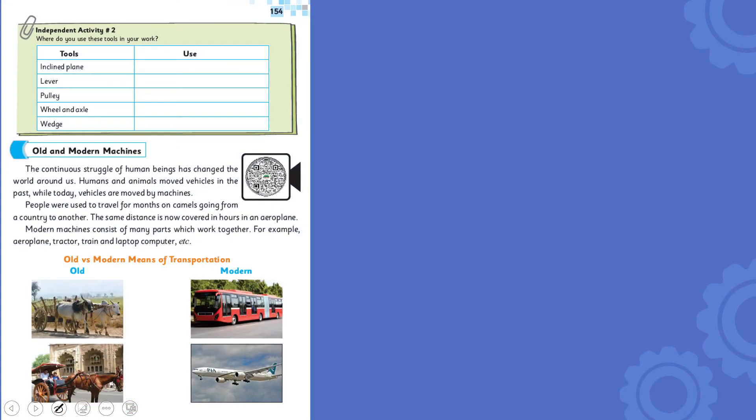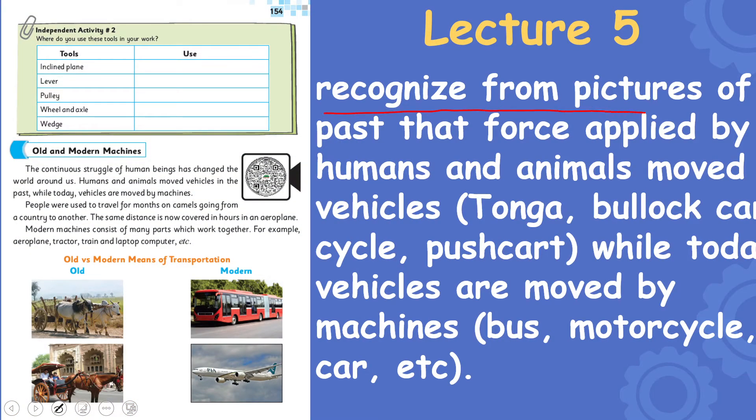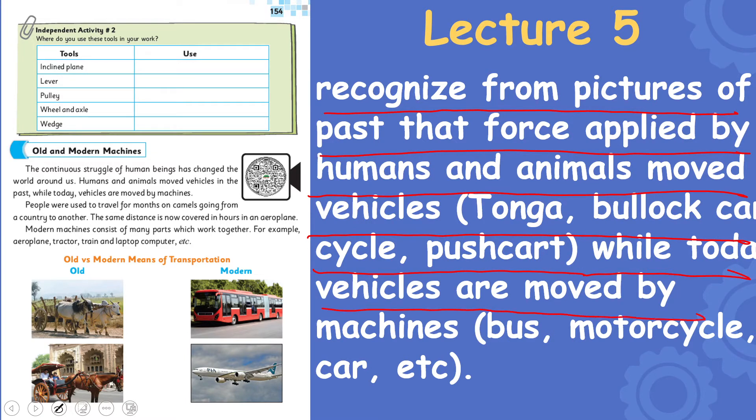From the pictures of the past, that force applied by humans and animals moved vehicles: tonga, bullock cart, cycle, pushcart, while today vehicles are moved by machines: bus, motorcycle, car, etc. So in lecture 5 we will discuss types of vehicles and machines.